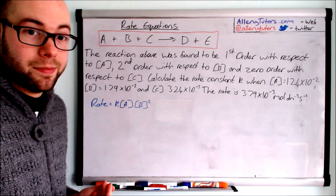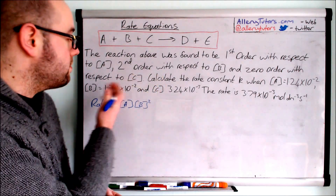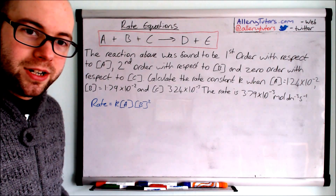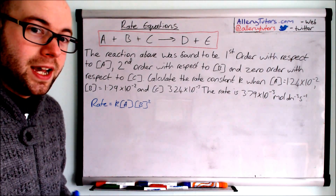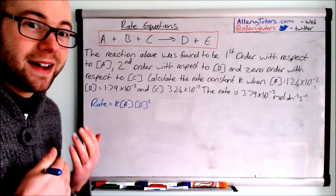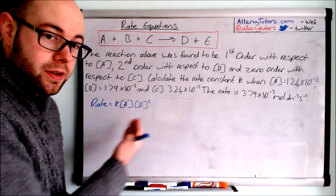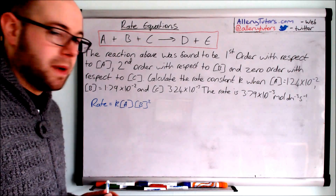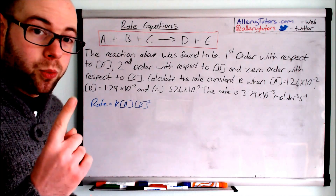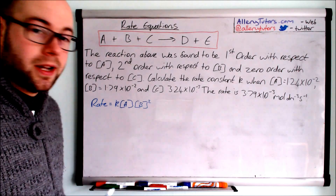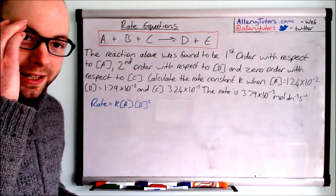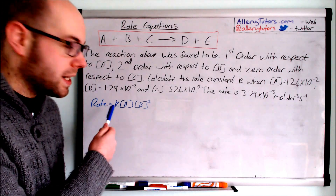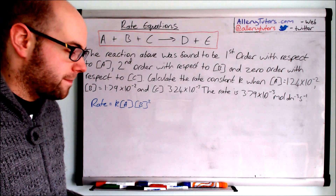C is zero order, meaning it doesn't matter how much we change the concentration of C — it has no effect on the rate. So we don't include C in our rate expression. Mathematically, anything to the power of zero equals one, which has no effect on the equation anyway, so that explains it mathematically as well.